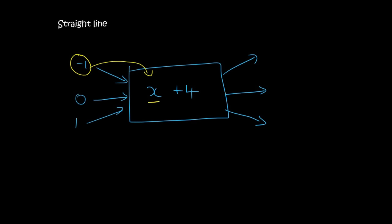So if we plug minus 1 into the place of x, that would be minus 1 plus 4 which would give you 3. If you plug in 0, you would get 0 plus 4 which is 4 and then 1 plus 4 which is 5.